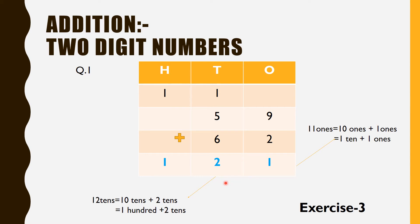Again, we cannot write 12 at the tens place because it has two digits. So we will regroup 12 tens as 10 tens plus 2 tens. Now, 10 tens can also be written as 100, and 2 tens will remain as is. 100 can be carried forward to the hundreds place, and 2 tens will be written at the tens place. Since there is no number to add at the hundreds place, we write 100 as it is. Therefore, the answer of this question will be 121.